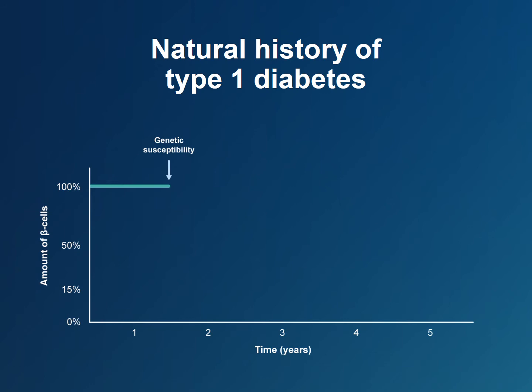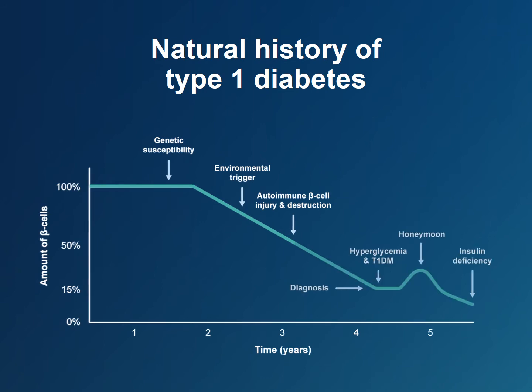Type 1 diabetes is an autoimmune condition that commences with genetic susceptibility and environmental triggers, leading to chronic inflammation of the insulin-producing beta cells in the islets of Langerhans of the pancreas. Environmental stimuli that trigger beta cell damage may include viral infections, early exposure to cow's milk during infancy, and vitamin D deficiency. This pre-symptomatic phase may last many years, though autoantibodies to pancreatic antigens can often be detected. Hyperglycemia only develops when the functional mass of beta cells declines below 20–15% of baseline. Ultimately, absolute insulin deficiency ensues, which can lead to diabetic ketoacidosis. Consequently, people with type 1 diabetes must always take insulin.